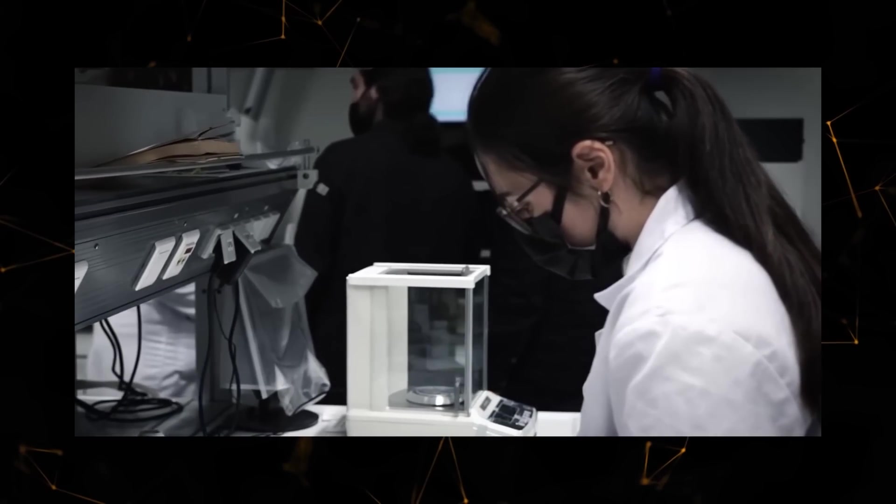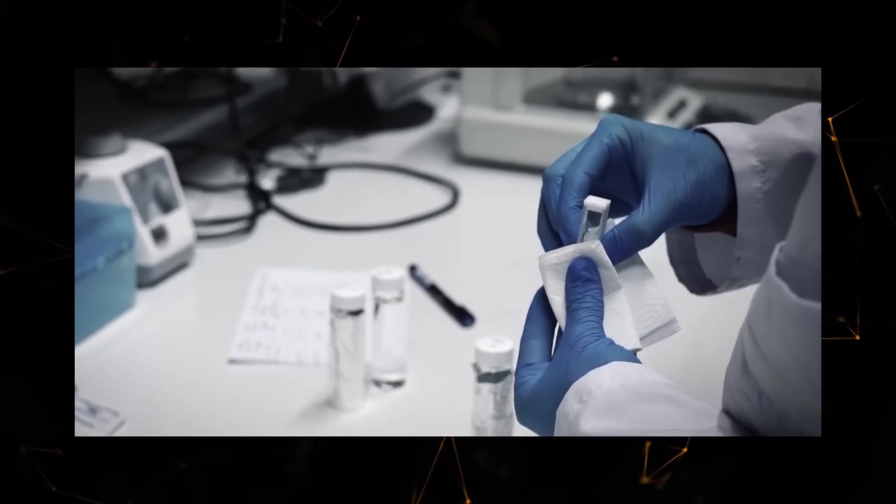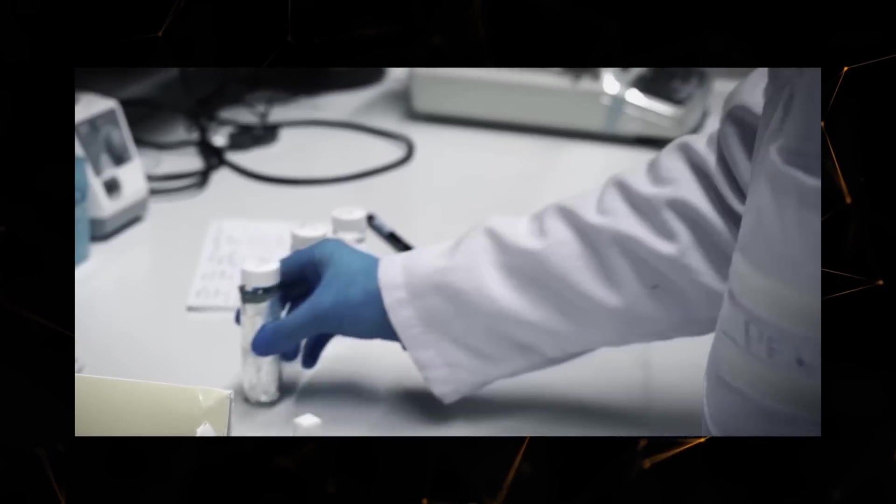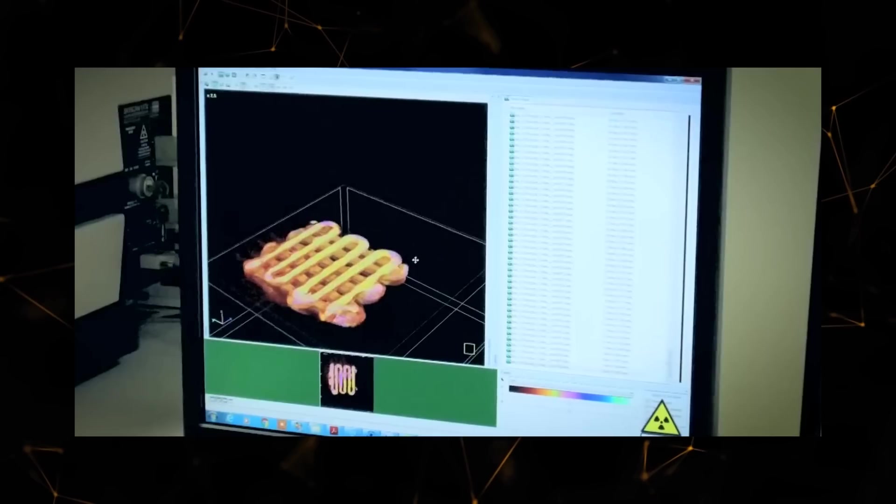In one of their experiments with substrates for growing borophene, scientists used silver, which was subjected to heating to a certain temperature. The resulting substrate looked like a cascade of terraces with a relatively large area each.